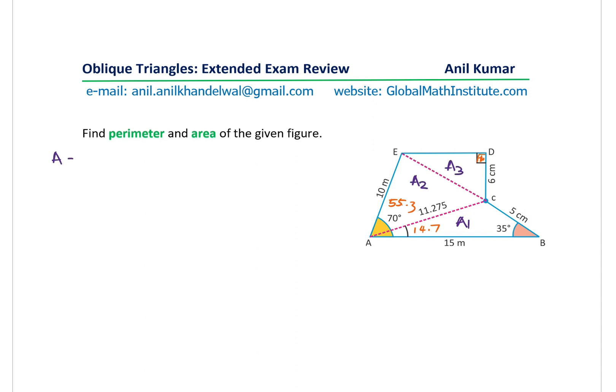So the area formula which we are using is half of AB sine C. As a special case, we know sine of 90 degrees is one, and that is the case for the right angle triangle.